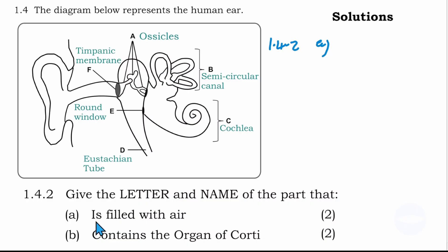Number A: the letter and name that is filled with air is the eustachian tube. As we said, it equalizes pressure or balances pressure on both sides of the tympanic membrane. Outside and the middle ear, the pressure must be the same so that the membrane will be able to vibrate. So this tube is filled with air. The answer is D, eustachian tube.